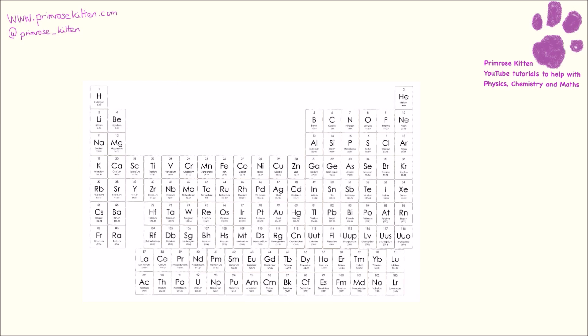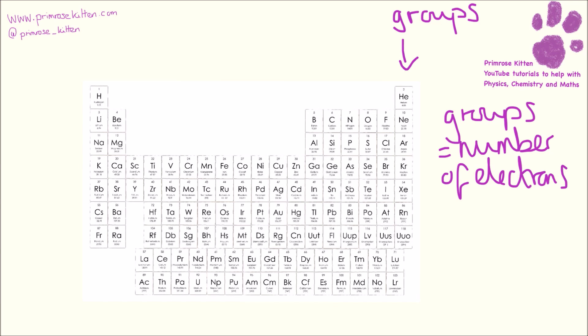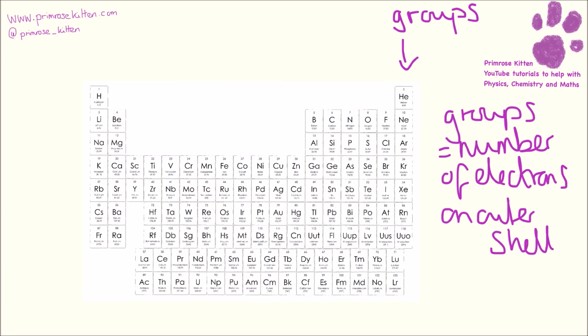The periodic table has loads and loads of useful bits of information. Now if we look at things going down, we have groups. And groups tell us the number of electrons on the outer shell. So over here we have group one, and everything in this has one electron on the outer shell. And then we have group two, and everything here has two electrons on the outer shell. Transition metals in the middle, we don't need to worry about those for the moment.